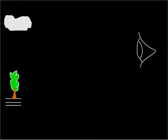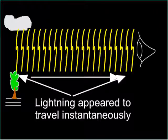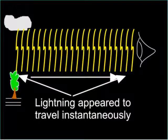For many years, scientists tried to measure the speed of light, but it was far too fast for the crude methods available to them at the time, and they concluded that it was infinite.